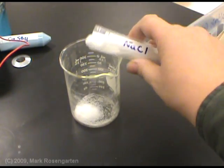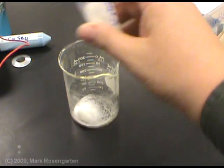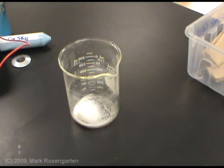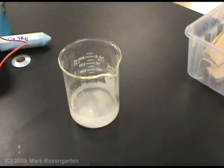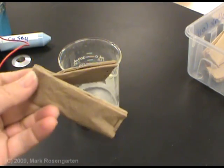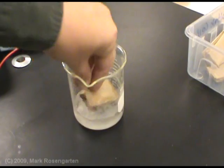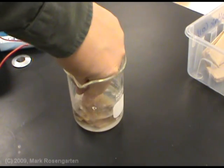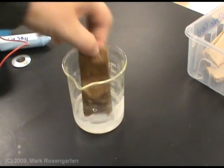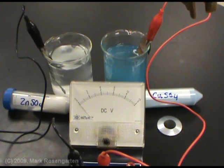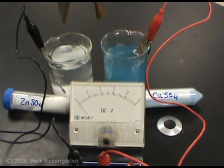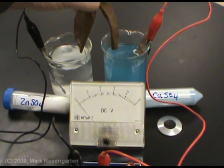So we take some salt, add distilled water to it to make a solution, and then we take our semi-permeable membrane, place it in here to soak it. Watch the voltmeter as the salt bridge is placed between the two solutions.